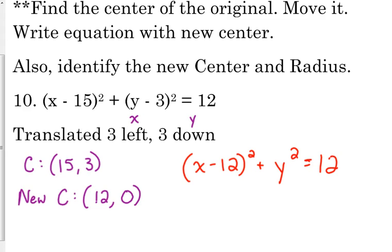And we're supposed to identify the new center, so the radius is still the square root of 12, and if we simplify that, that's 2 square roots of 3. Because that's 4 times 3, square root of 4 is 2, 3 is not a perfect square so it stays under. So there's the new equation, the new center, and the radius in both cases.